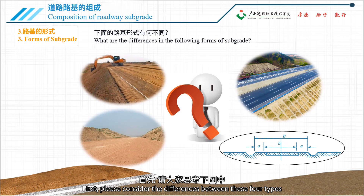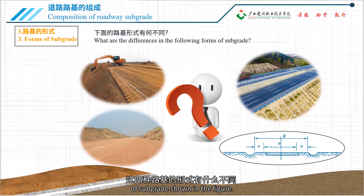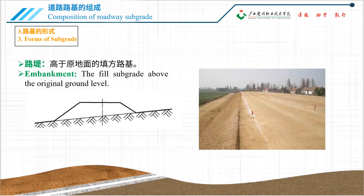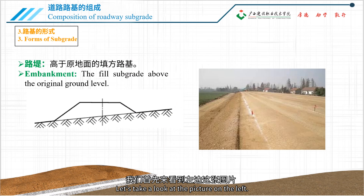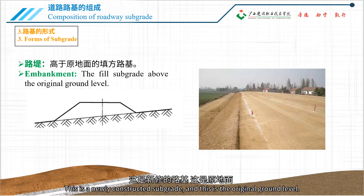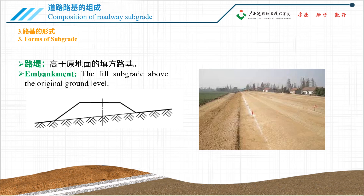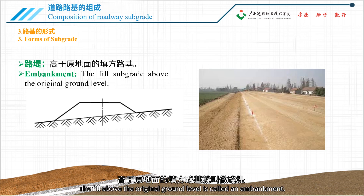First, please consider the differences between these four types of subgrade shown in the figure. Let's take a look at the picture on the left. This is a newly constructed subgrade and this is the original ground level. The fill above the original ground level is called an embankment.